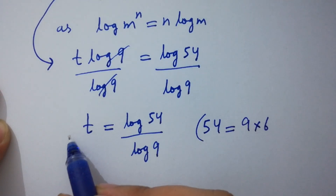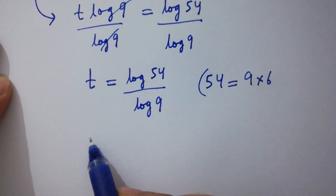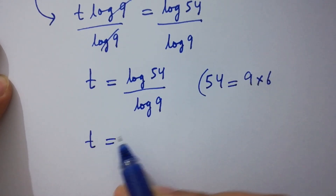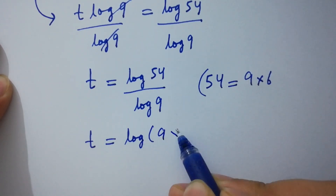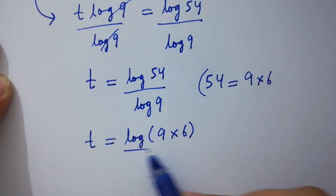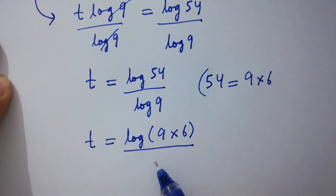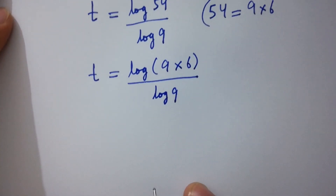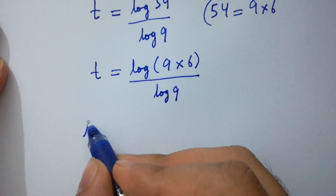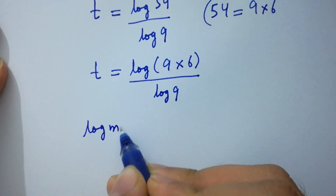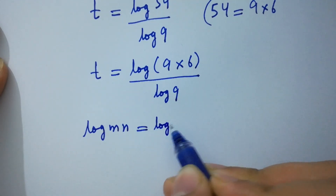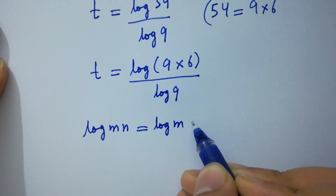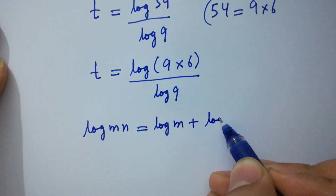t will be equal to log(9 × 6) over log 9. Using the rule log mn equals log m plus log n.